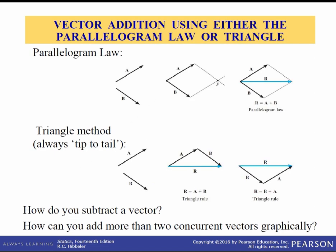Now, vector addition. This is the graphical way to envision what we're doing when adding vectors. We have two ways: the parallelogram law and the triangle method. In the parallelogram law, to add two vectors a and b, you join them at their tails, then draw a line from the tip of b parallel to a, and from the tip of a parallel to b. The resultant vector is then drawn between the intersection point and the original point.